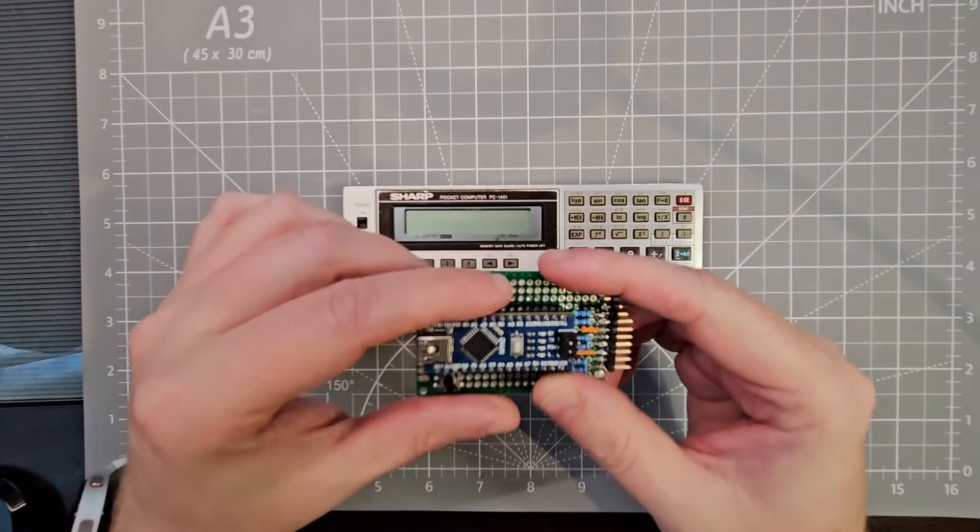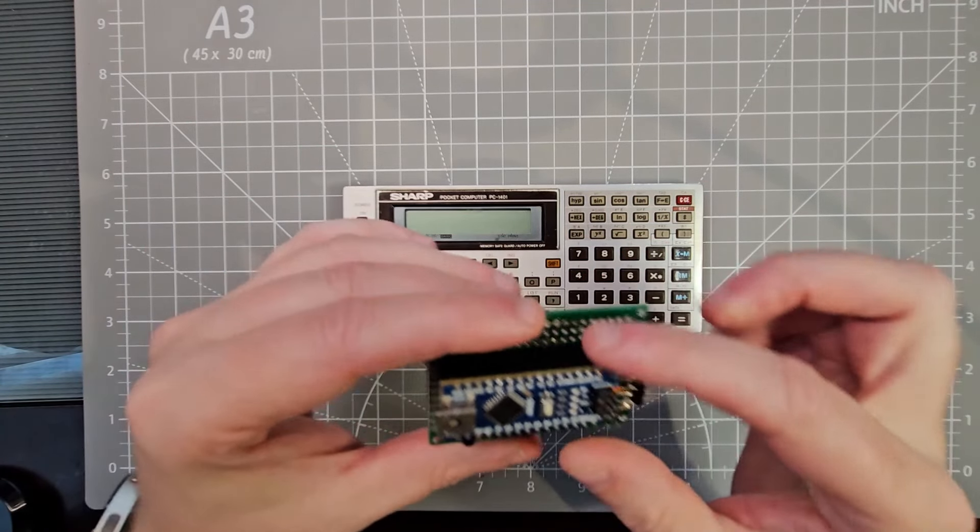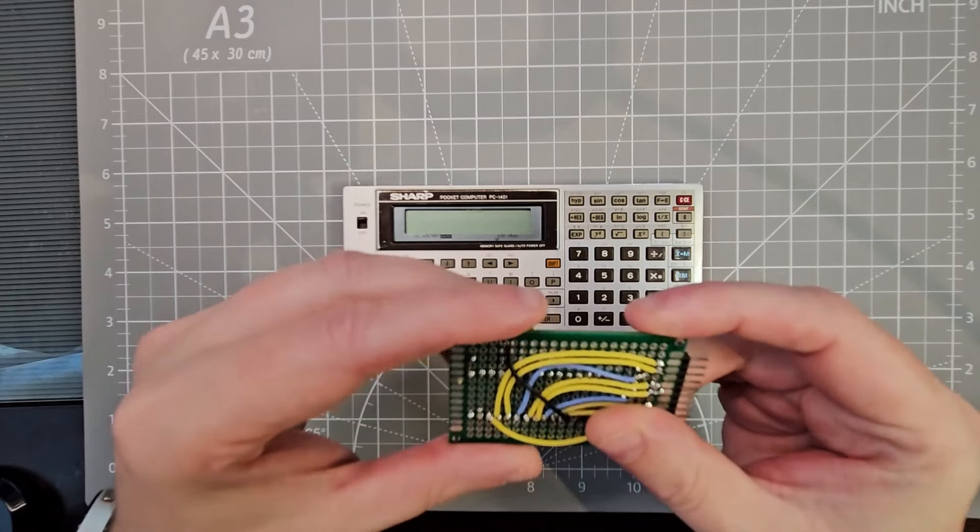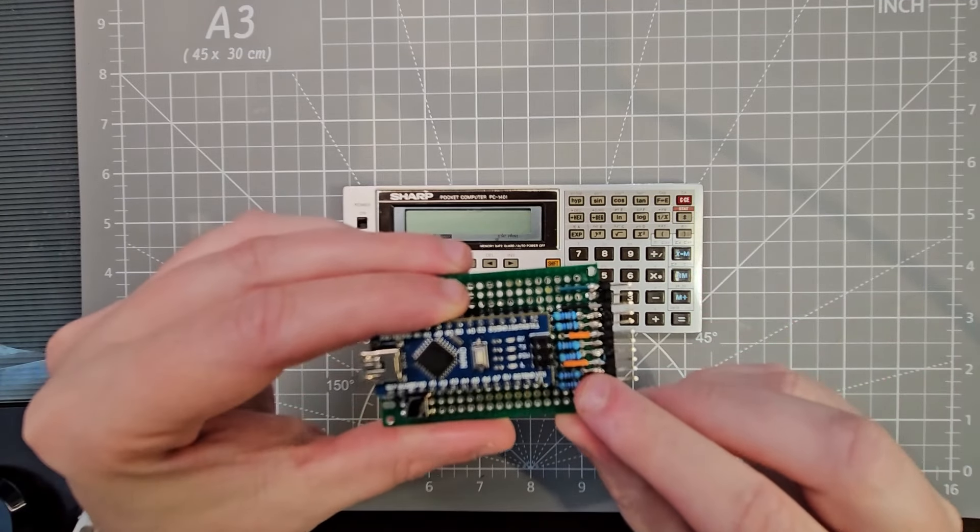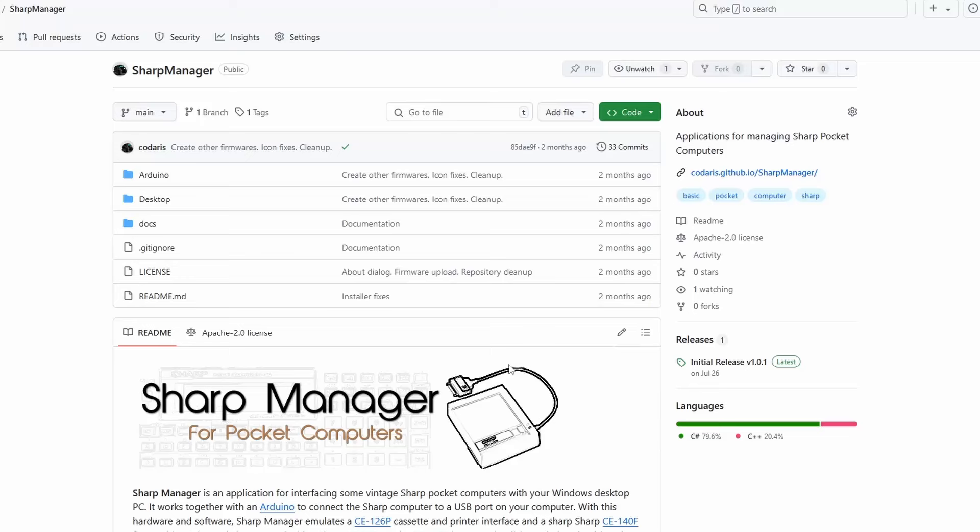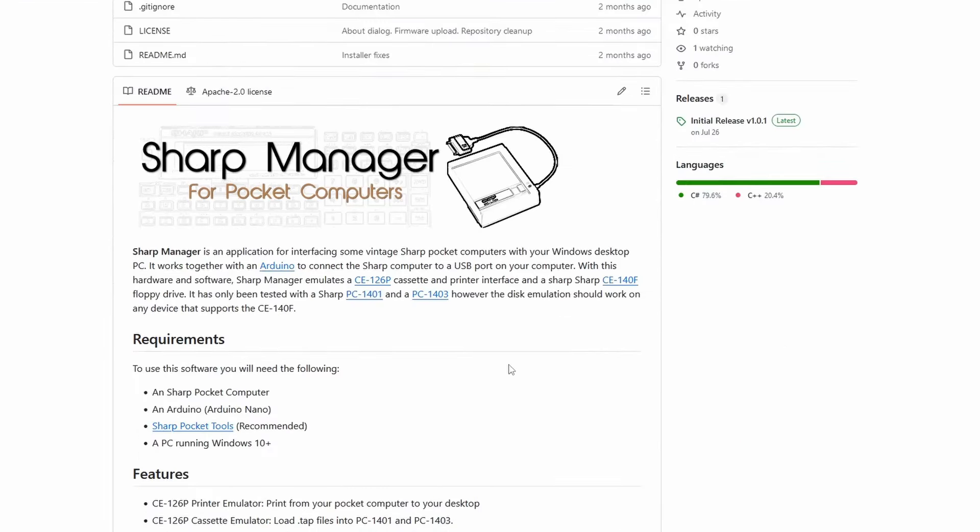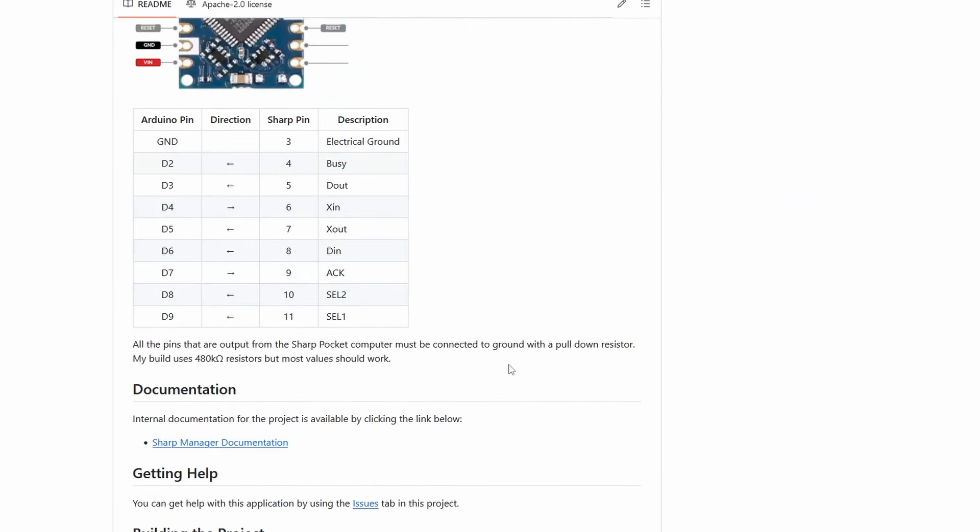This is what the little module looks like, but it's really just an Arduino Nano connected directly to the output pins and a few pull-down resistors for any of the outputs from the pocket PC. There's a diagram on my GitHub page to show how it's wired up. It's actually really simple, so you can put this together on a breadboard, which is how I started.